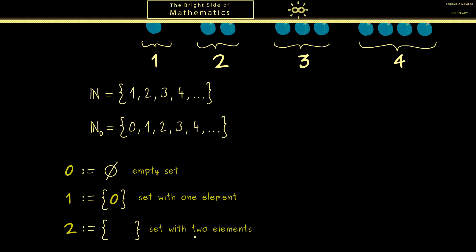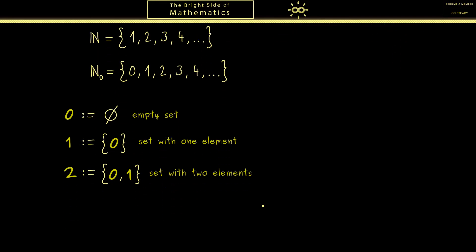Ok now for the number 2 we need 2 elements. So what do we do? We take the only 2 elements we know. So 0 and 1 because we know they are different. At this point you should see how this game works and we can just continue it.